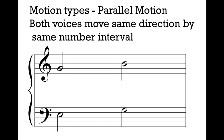Parallel motion is our next motion type. Both voices are moving in the same direction. We have two different motion types to describe when voices move the same direction. When voices move the same direction by the same number interval, we call this parallel motion. Here both of our voices are moving up, and they're both moving up by the same amount — both moving up by a third. The fact that one is a major third and one is a minor third does not change that we call this parallel motion; we're more concerned about the number interval. We see parallel motion a lot, but in very controlled and specific situations.